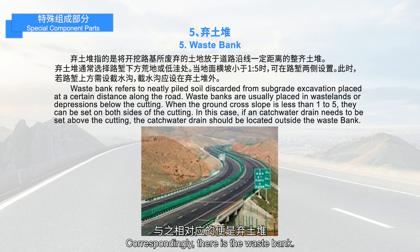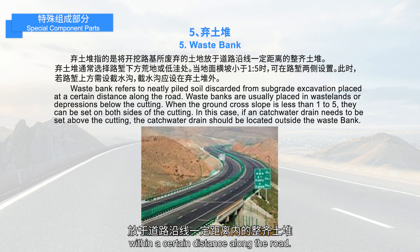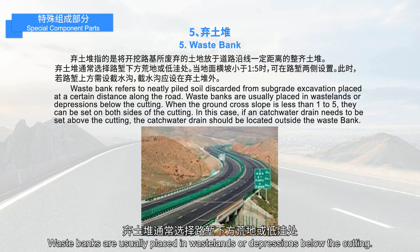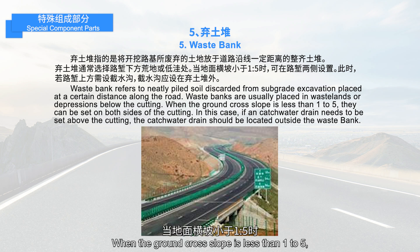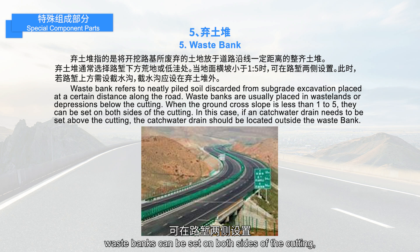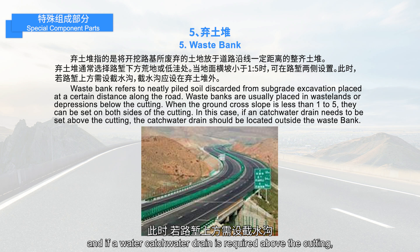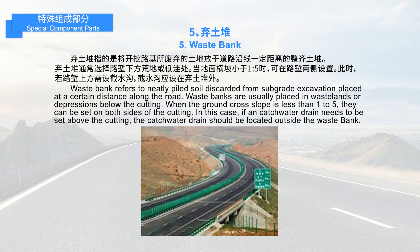Correspondingly, there is the waste bank. Waste bank refers to neatly piled soil discarded from subgrade excavation within a certain distance along the road. Waste banks are usually placed in wastelands or depressions below the cutting. When the ground cross slope is less than 1 to 5, waste banks can be set on both sides of the cutting, and if a catchwater drain is required above the cutting, it should be placed outside the waste bank.